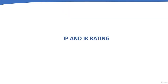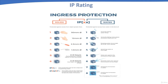This chapter covers IP and IK ratings of CCTV cameras. The IP rating system is the international standard that defines the level of protection against intrusion by things such as dust, solids, and liquids into enclosures. IP rating determines whether your camera can be installed for outdoor or indoor applications. The IP rating consists of the letters IP followed by two numbers ranging from 00 to 68.